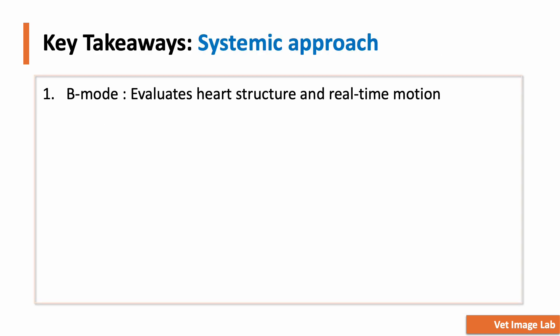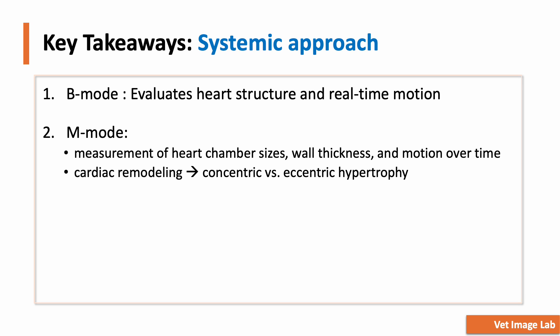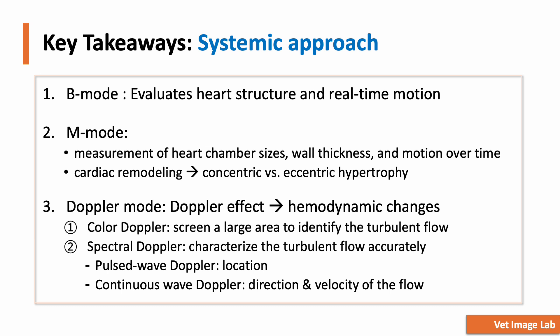Now let's summarize today's key points. When performing a cardiac ultrasound examination, we start by using B-mode to evaluate heart structures such as the valves, chamber walls, and internal dimensions, identifying any anatomical abnormalities. B-mode also allows us to assess real-time cardiac motion during systole and diastole. Next, we use M-mode to precisely measure the heart's wall thickness and chamber dimensions, enabling us to identify cardiac remodeling and classify hypertrophic changes accurately. Then we apply color Doppler to visually detect abnormal blood flow patterns. If any abnormal flow is observed, we proceed to spectral Doppler to quantify blood flow velocities — PW Doppler helps pinpoint the exact location of abnormal flow, while CW Doppler accurately measures high blood flow velocities without aliasing. To achieve an accurate and comprehensive cardiac evaluation, it is essential to integrate all of these modes.